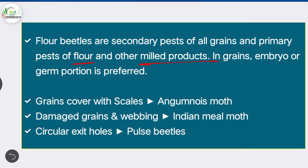Here are some examples of specific damage symptoms produced by storage insect pests: grains covered with scales are produced by Angoumois grain moth; damaged grains and webbing are produced by Indian meal moth; and circular exit holes are produced by bess beetles.